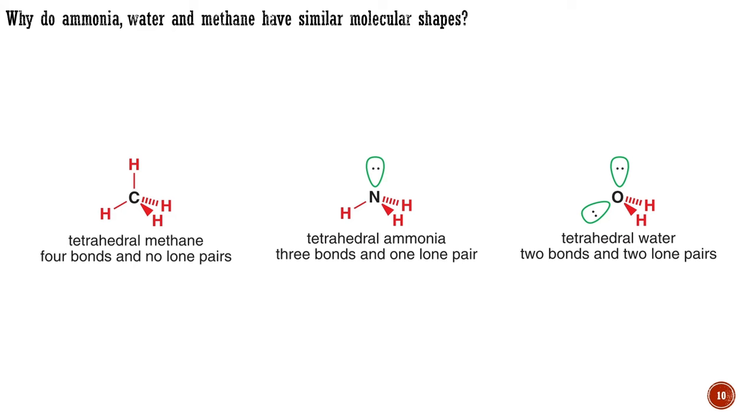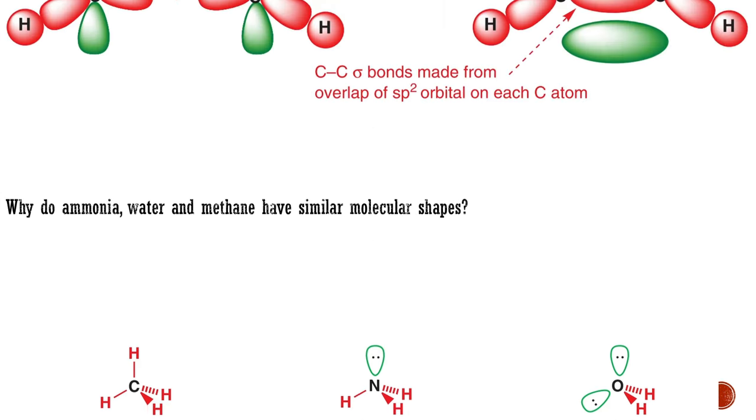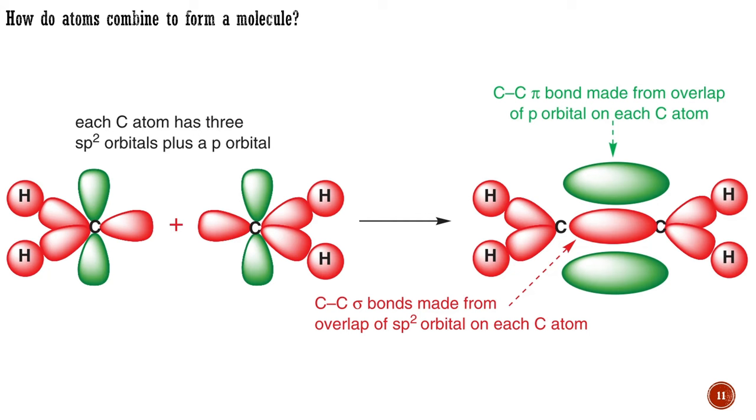But what determines how electrons are arranged? Why do 10 electrons give rise to a tetrahedron? Before we can answer these questions, we need to simplify our discussion a bit and think about electrons not in molecules, but in individual atoms. We can then approximate the electronic structure of molecules by considering how the component atoms combine.